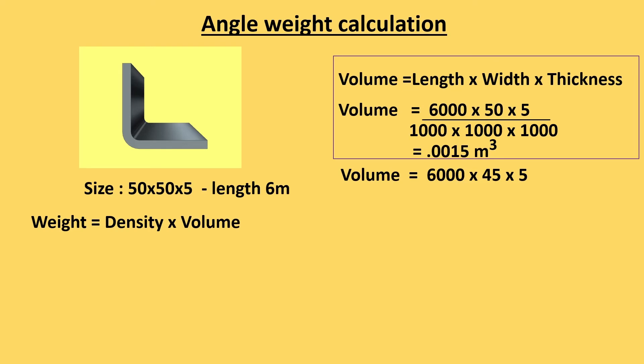So total we get 45 and multiplication of 6000 into 45 into 5 give us volume of rectangle block. We divide each figure by 1000 then we will get volume of rectangle which is laid in horizontal plane. This is 0.00135 meter cube.